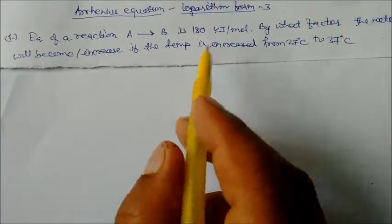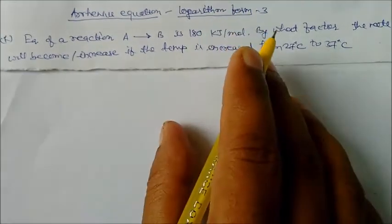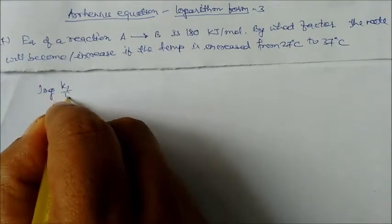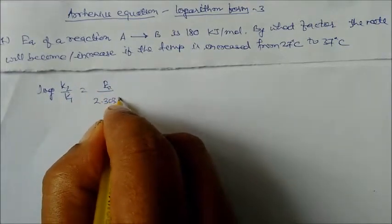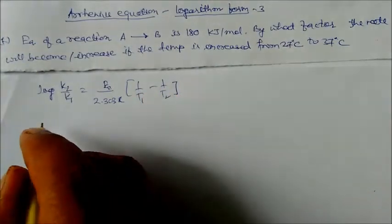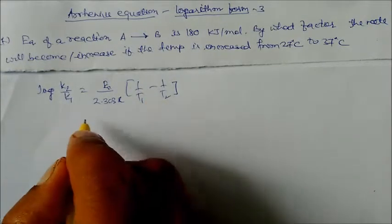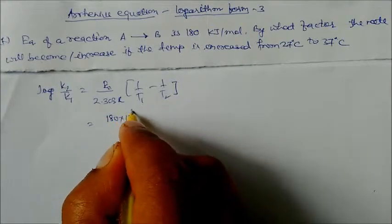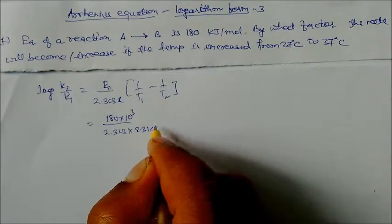So log of K2 by K1 is equal to EA divided by 2.303R, multiplied by (1/T1 minus 1/T2), where T1 is the lower temperature and T2 is the higher temperature. Putting in all values: EA is 180 × 10³, R is 8.314.